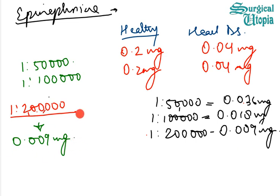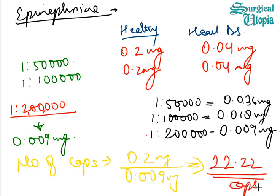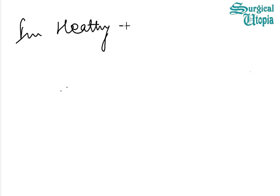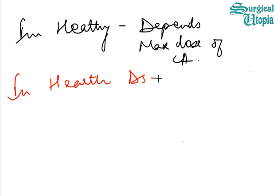The maximum dose of epinephrine that can be given to a healthy patient is 0.2 mg. The number of capsules that can be delivered to a healthy patient is 0.2 mg divided by 0.009 mg, which equals approximately 22.22 capsules. In healthy patients, the number of cartridges depends on the maximum dose of the local anesthetic agent, whereas in heart disease patients it depends on the maximum dose of epinephrine.